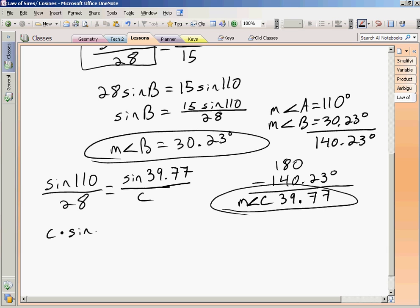C times sine of 110 is equal to 28 times sine of 39.77. And I'm dividing both sides by sine of 110. And side c is equal to 28 times sine of 39.77 divided by sine of 110.